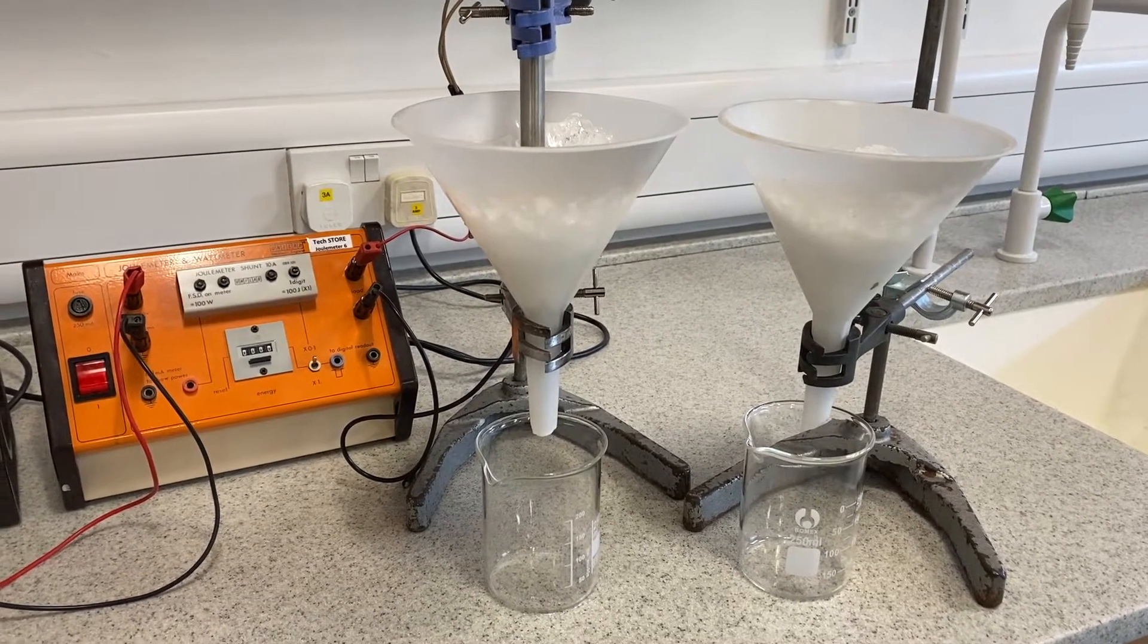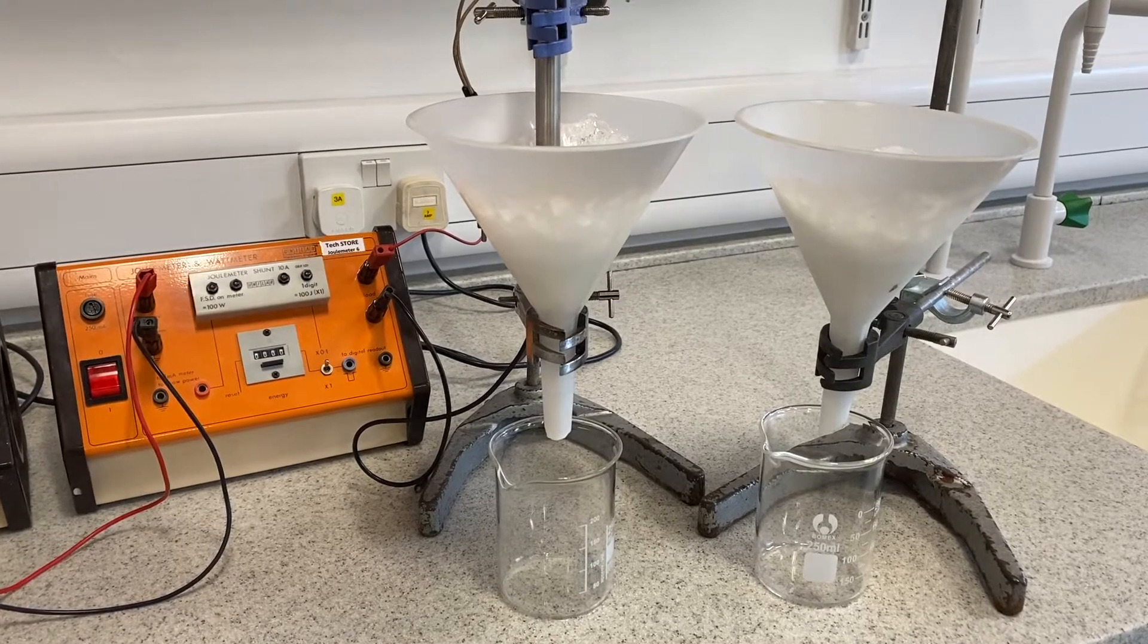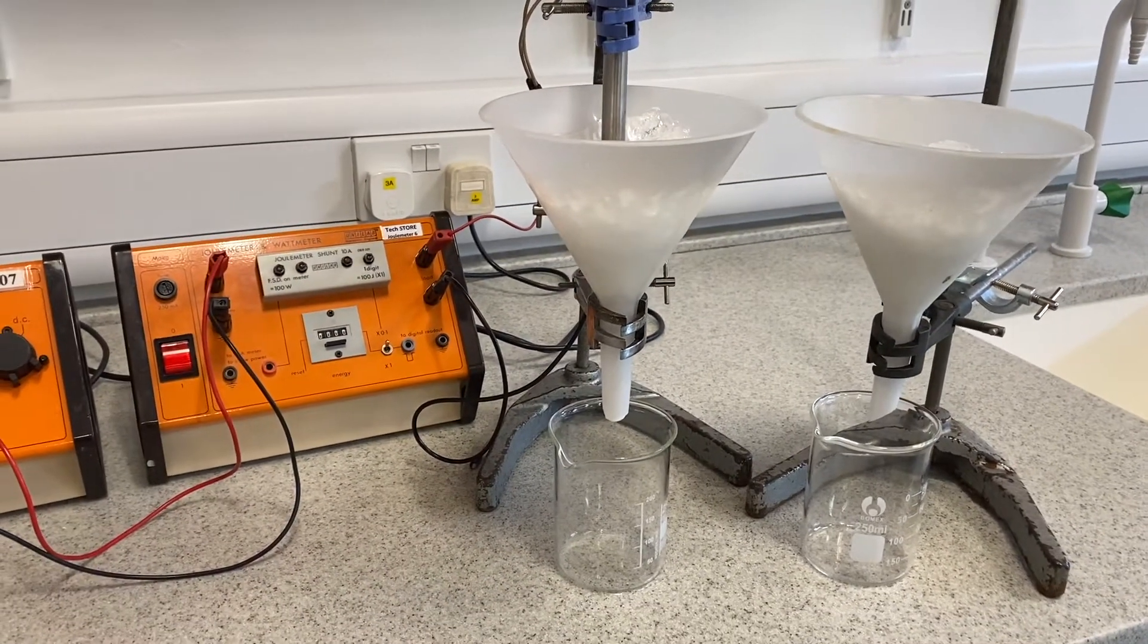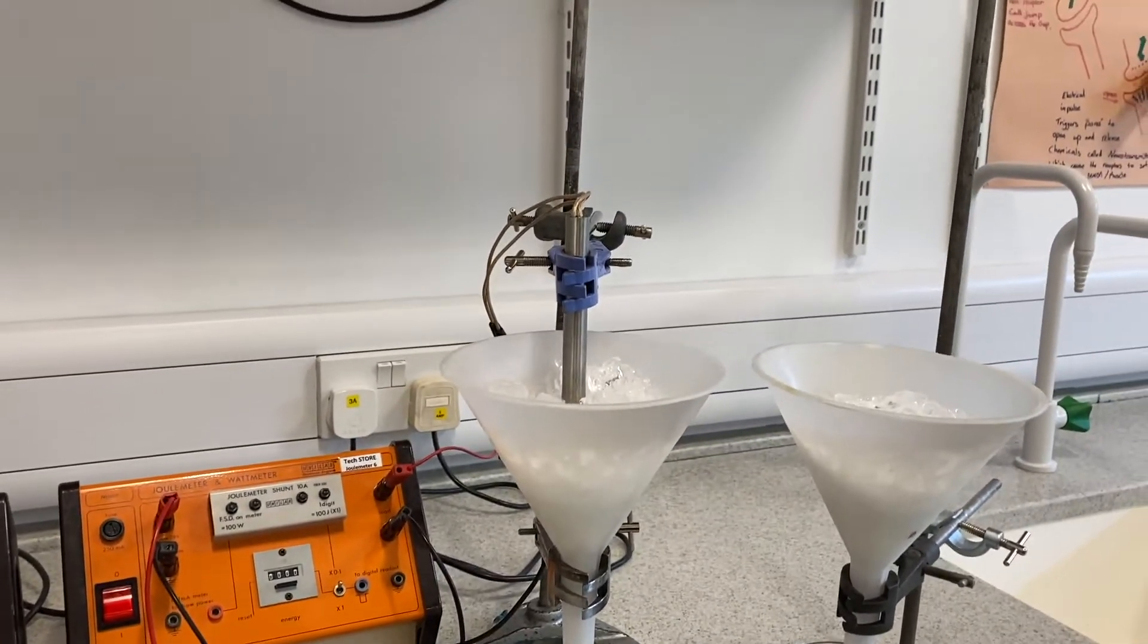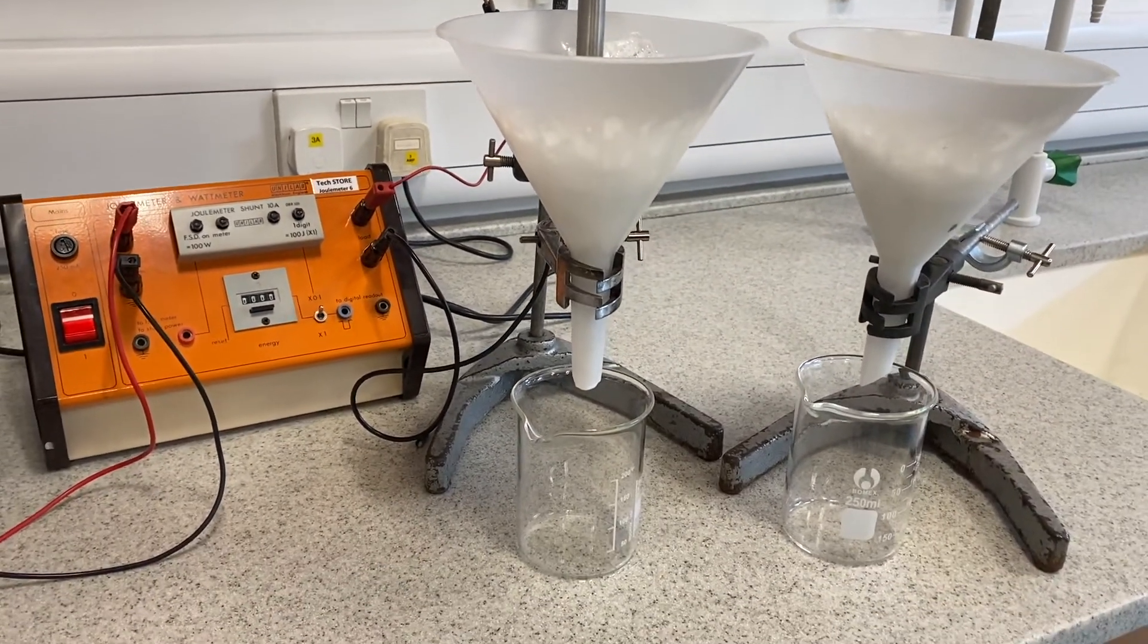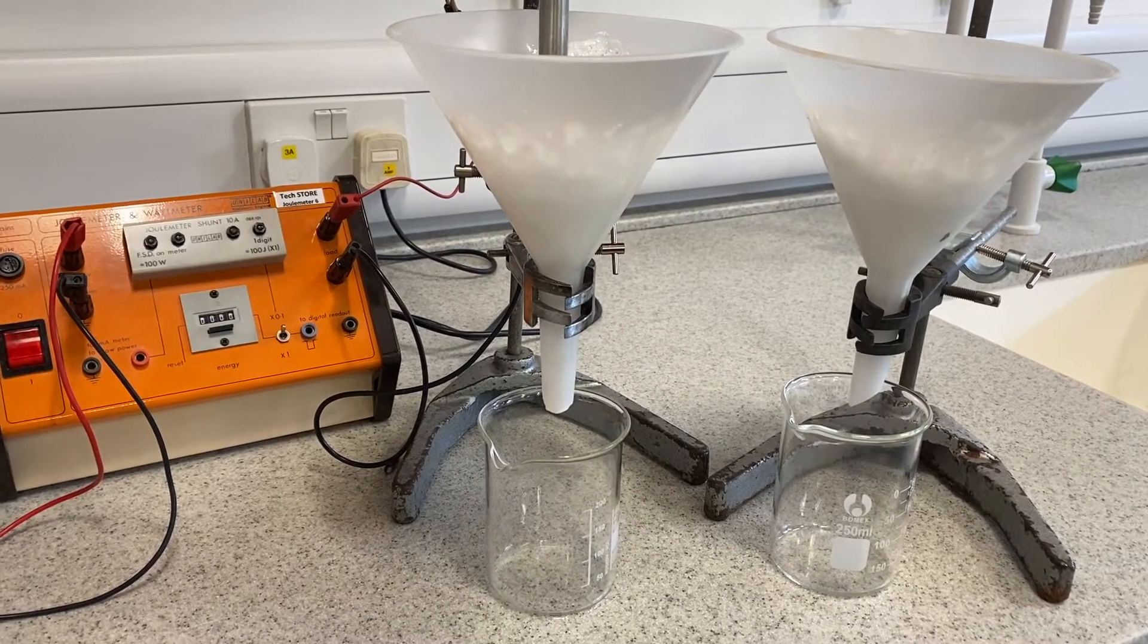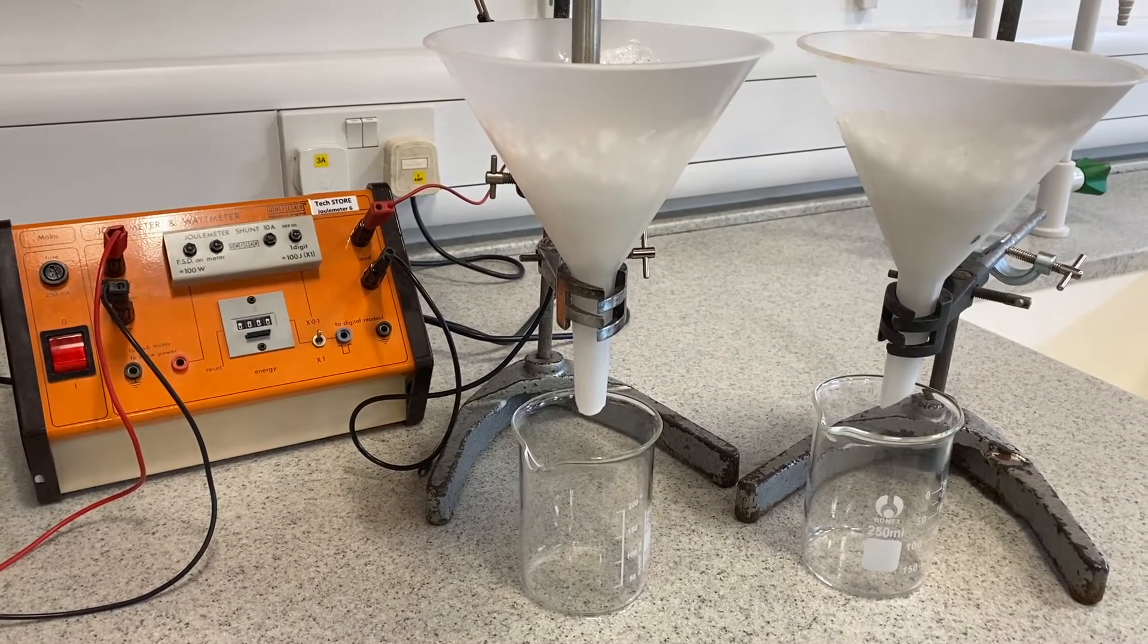So what we're going to do is we're going to leave this just to settle for a few minutes so that the ice has got a chance to get down to zero degrees C. We'll know that once we see some water dripping out of the bottom of each of the funnels. And then what we'll do is we'll switch the heater on and we will supply just this funnel here, the ice on the left, with 10,000 joules. And then we will compare how much water is in each beaker.